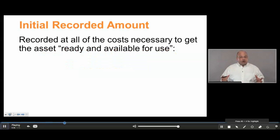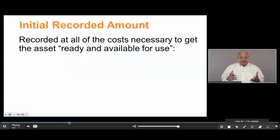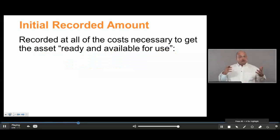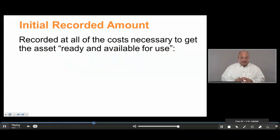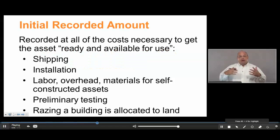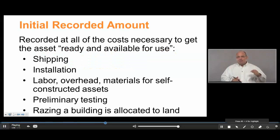So what costs are included? We have the cost of the asset itself — the piece of equipment, the truck, whatever it is. But we may also need to include shipping costs, installation costs, labor, overhead, and materials if we constructed the asset ourselves. There might also be some preliminary testing — we install it and need to make certain that it's working.